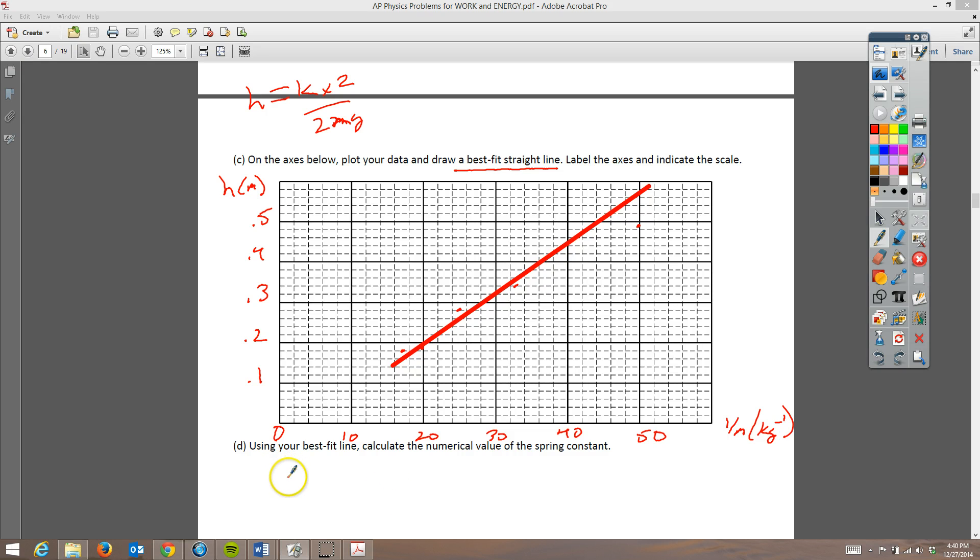The next thing they want us to do is to use our best fit line, calculate the numerical value of the spring constant. So one of the things that we can do is just pick a couple points that would be right on the line and find the slope. So I'm going to pick 0.42 minus 0.1. I'm pulling that off the line. And I'm going to divide it by 40. So this is about 0.42. 40 matches with that 0.42. And then at 10, it looks like it's going to be right at 0.1. So I'm going to do 10 here.